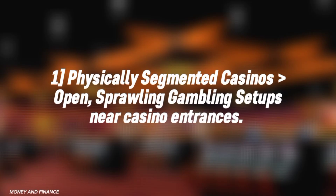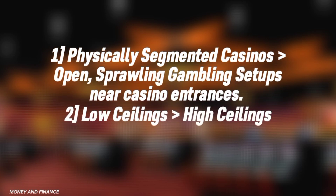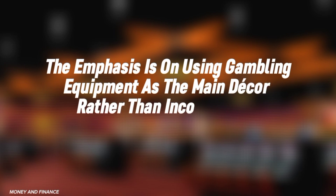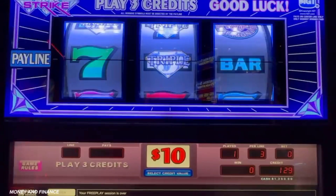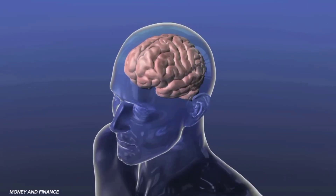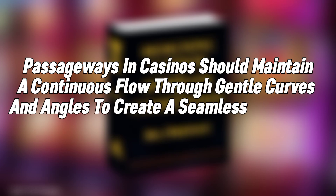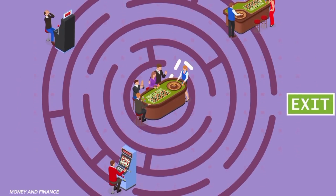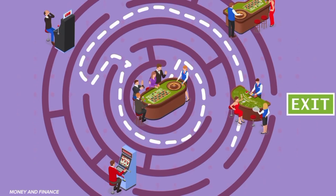Physically segmented casinos are favored over open, sprawling gambling setups near casino entrances. Low ceilings are preferred over high ceilings, and short lines of sight are prioritized over extensive visual depth. The emphasis is on using gambling equipment as the main decor. Friedman's fourth principle — the maze layout beats long straight walkways — introduces the concept of avoiding 90-degree turns, which serve as decision points that trigger the decision-making part of the brain, potentially leading individuals to exit. Passageways should maintain a continuous flow through gentle curves. After altering an entryway from a right turn to a curved turn, the strategy resulted in a doubling of guests entering that area. Casinos also strategically arrange exits to be inconspicuous, often obstructing them with tables, fostering false hope of recouping losses before leaving.